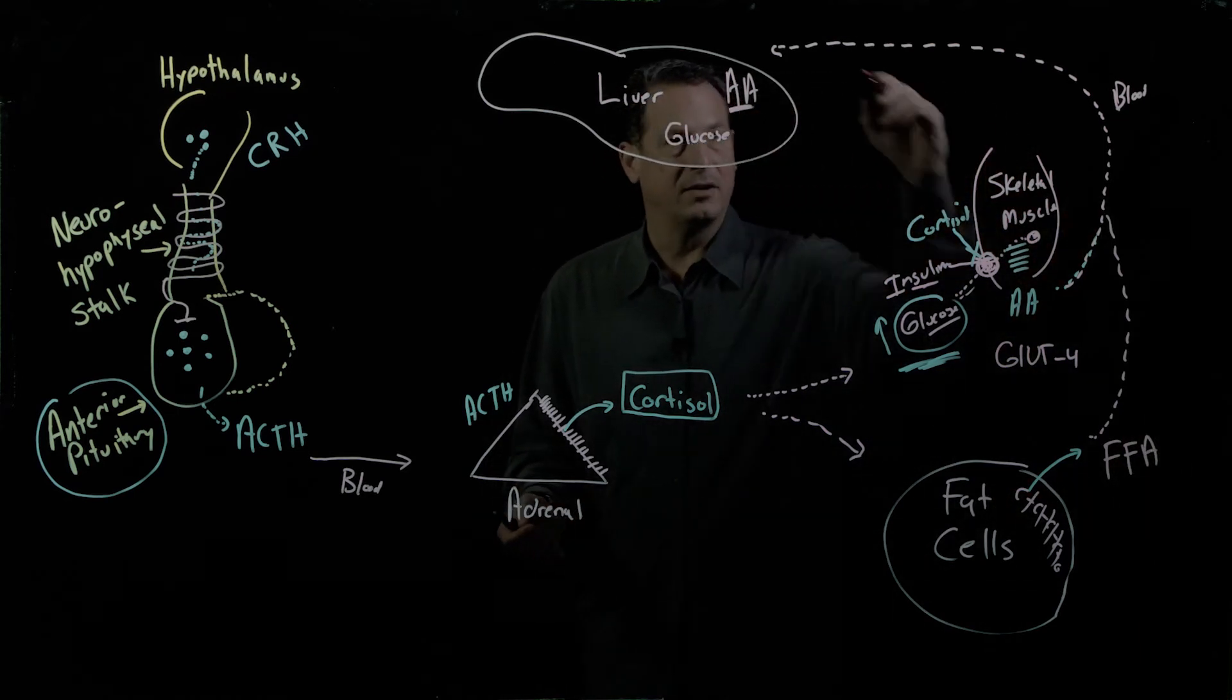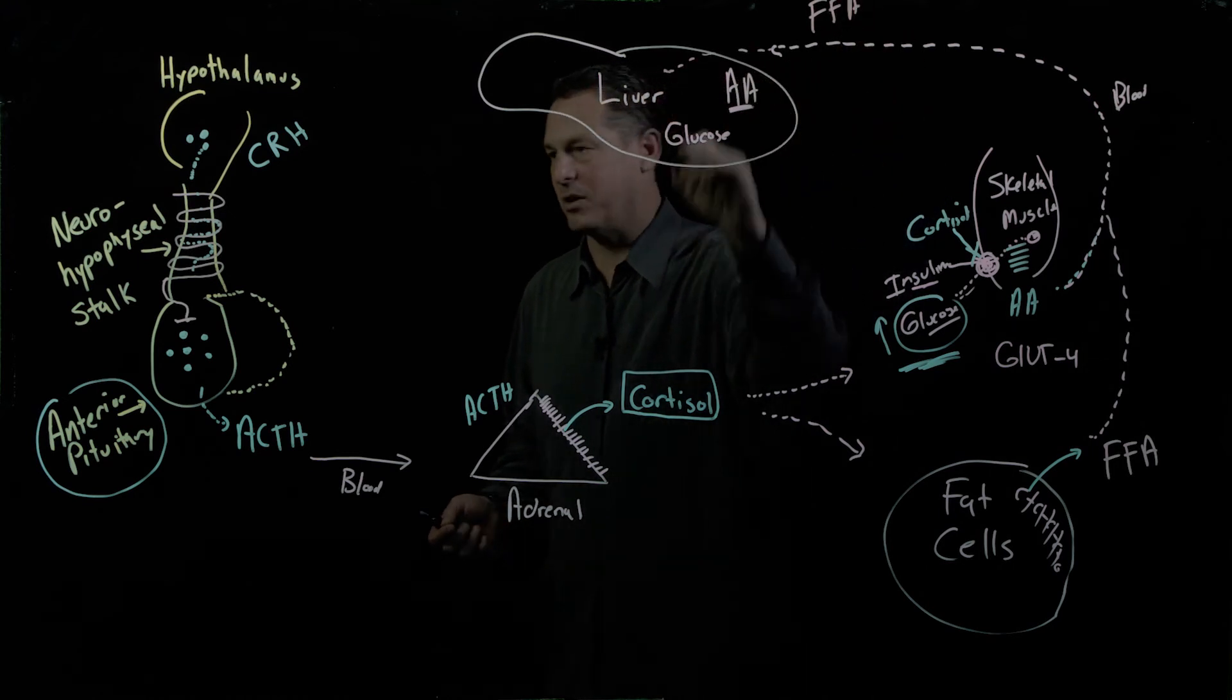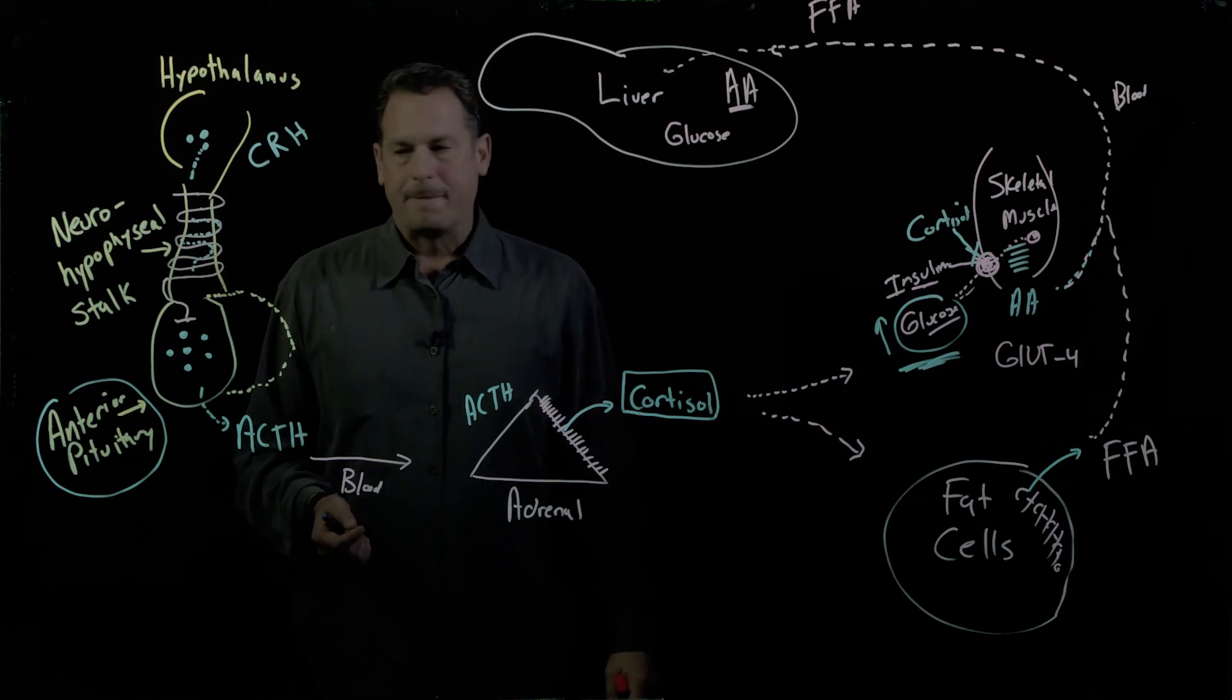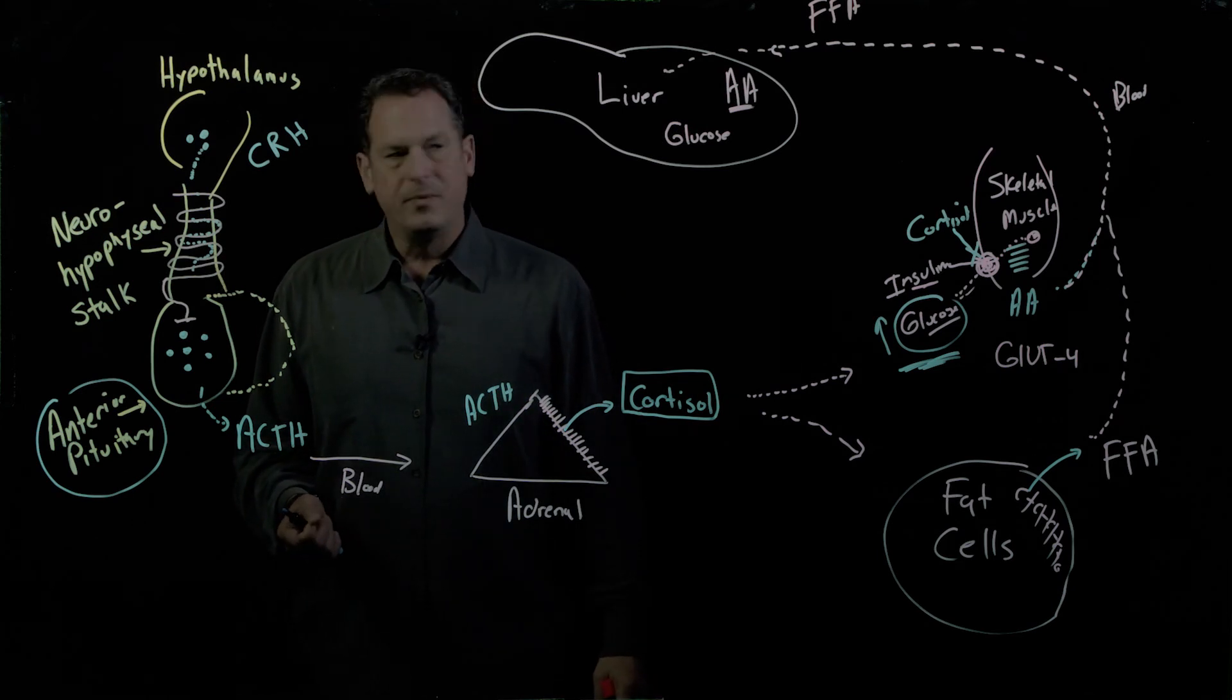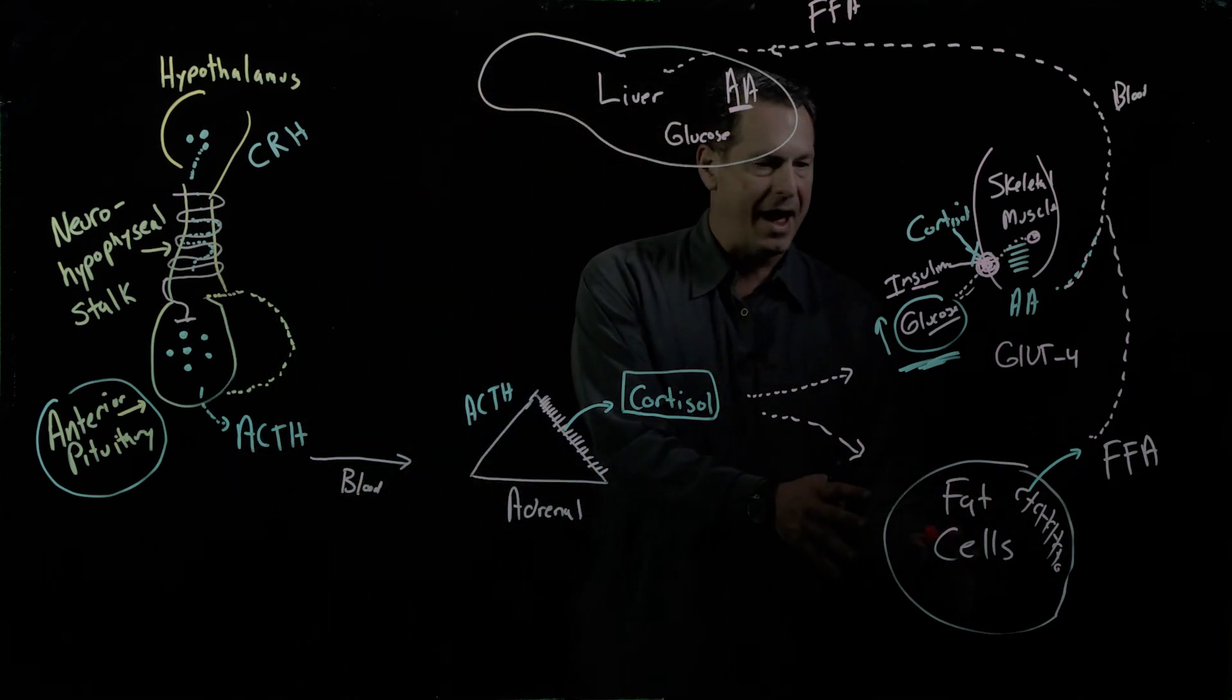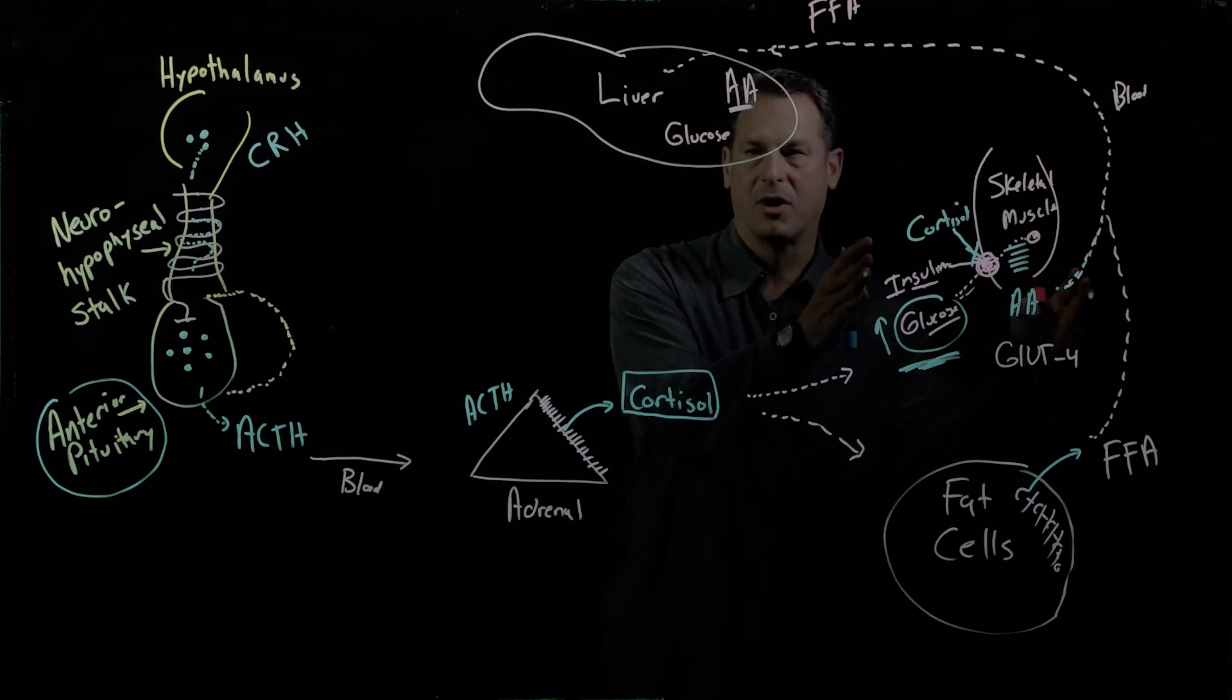They circulate along with the amino acids and they also get metabolized in the liver. So you're breaking down fat, you're glucose intolerant, you're breaking down proteins,